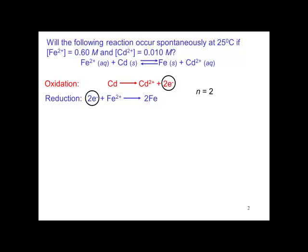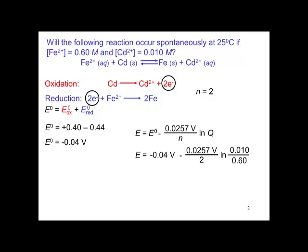Again, a 2 electron change. E zero equals E zero oxidation plus the reduction. That's an E zero of plus 0.40 minus 0.44, or E zero is negative 0.04 volts. Substituting into the Nernst equation: negative 0.04 volts minus 0.0257 volts divided by 2 times the log of 0.010 over 0.60 gives an E of 0.13 volts. It's spontaneous because E is positive.